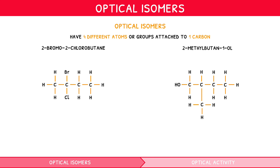Starting with 2-bromo-2-chlorobutane, we can see the first, third, and fourth carbons do not have four different groups attached, but the second carbon has a bromine, chlorine, CH3, and C2H5 group.